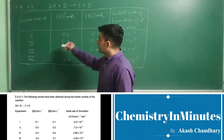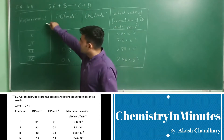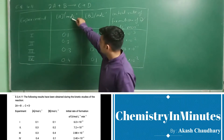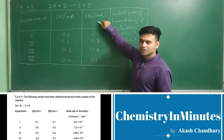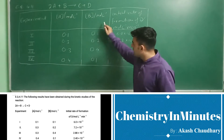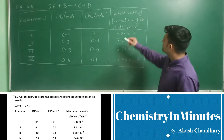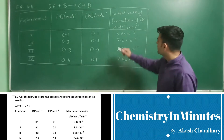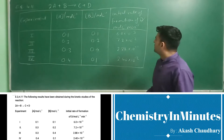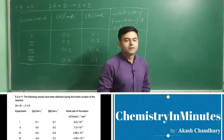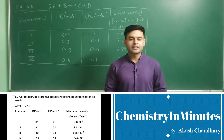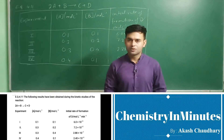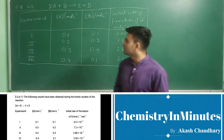The table is formed on the board. In the first column there is experiment number: first, second, third, and fourth. In the second column there is concentration of A in mole per liter. In the third column there is concentration of B in mole per liter, and in the fourth column there is initial rate of formation of D, which is the initial rate of reaction in mole per liter per minute. The question is to determine the rate law and the rate constant for the reaction.